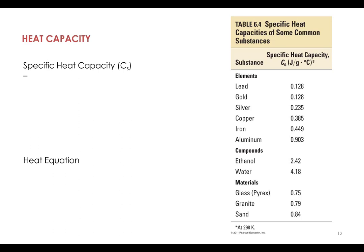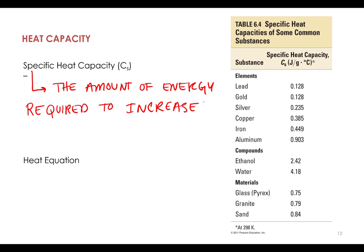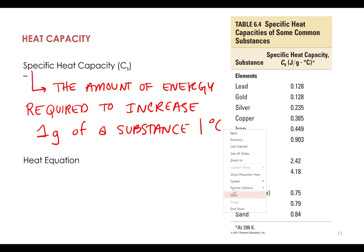And we will primarily use the specific heat capacity. The specific heat capacity is the amount of energy required to increase one gram of a substance one degree Celsius or one Kelvin. We can also use Kelvin here, and sometimes we might want to.